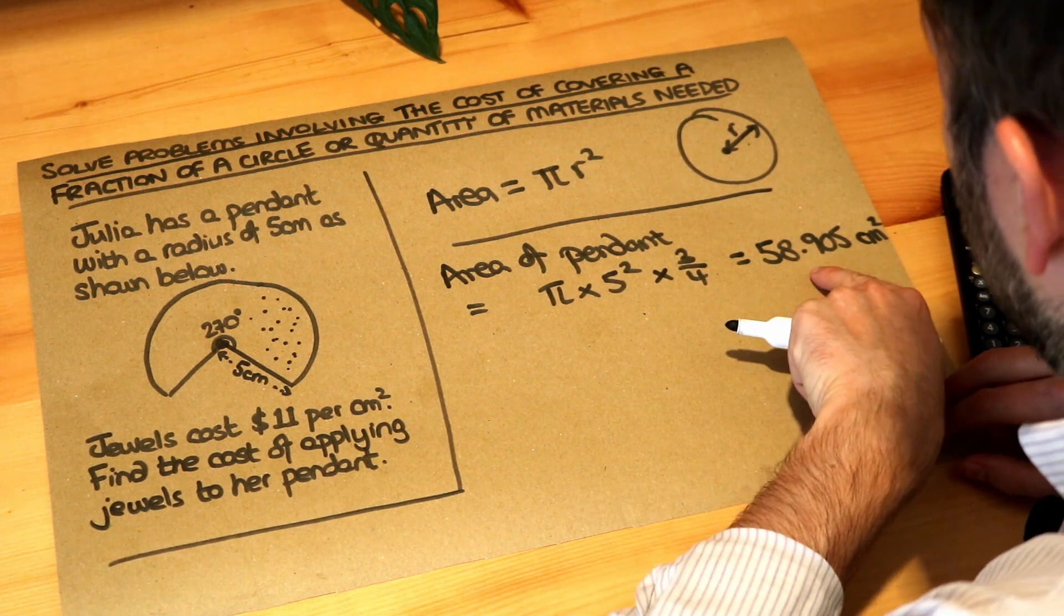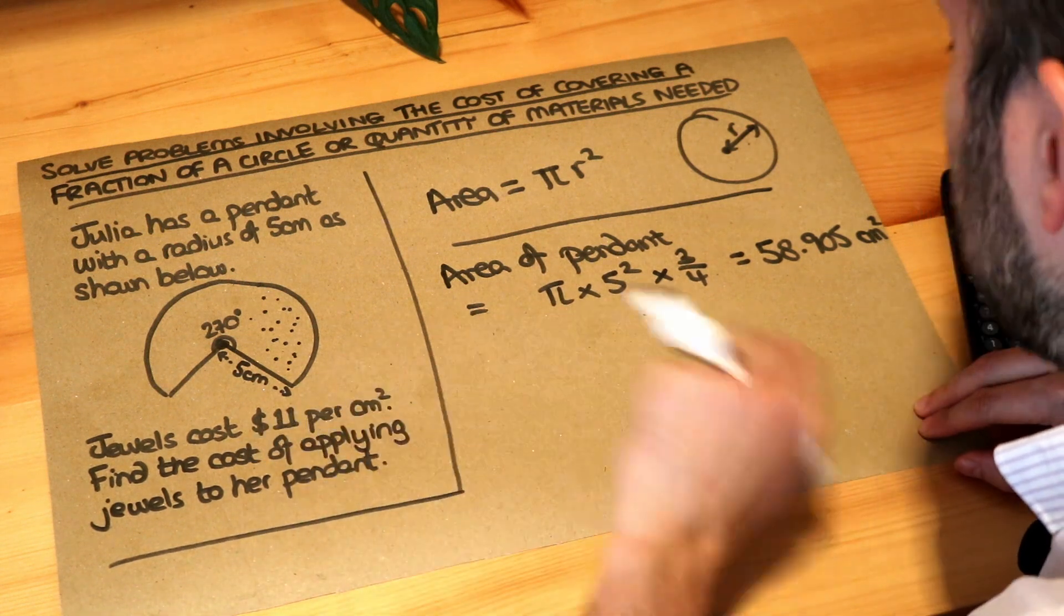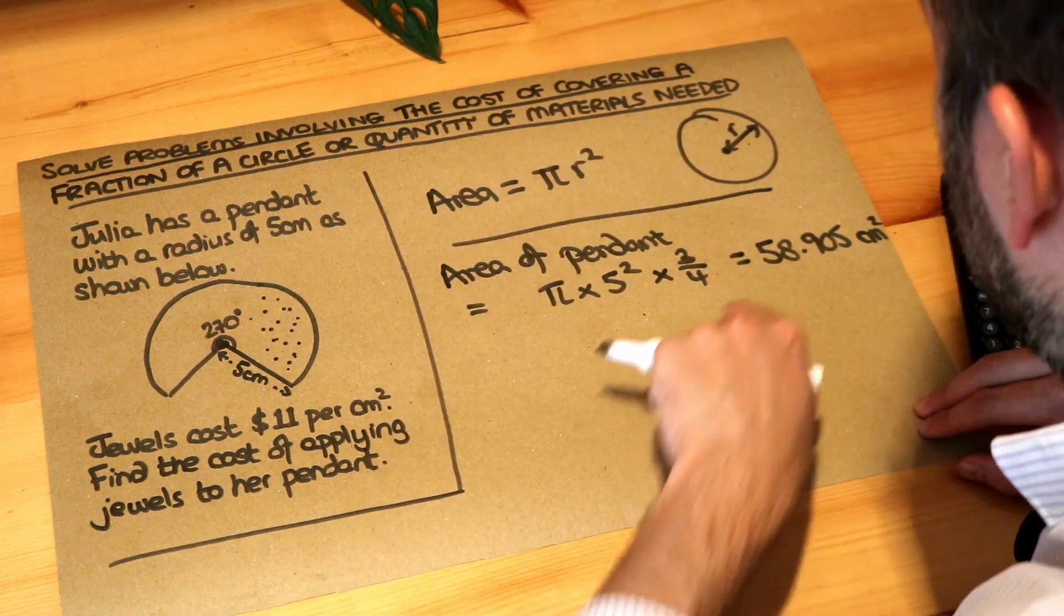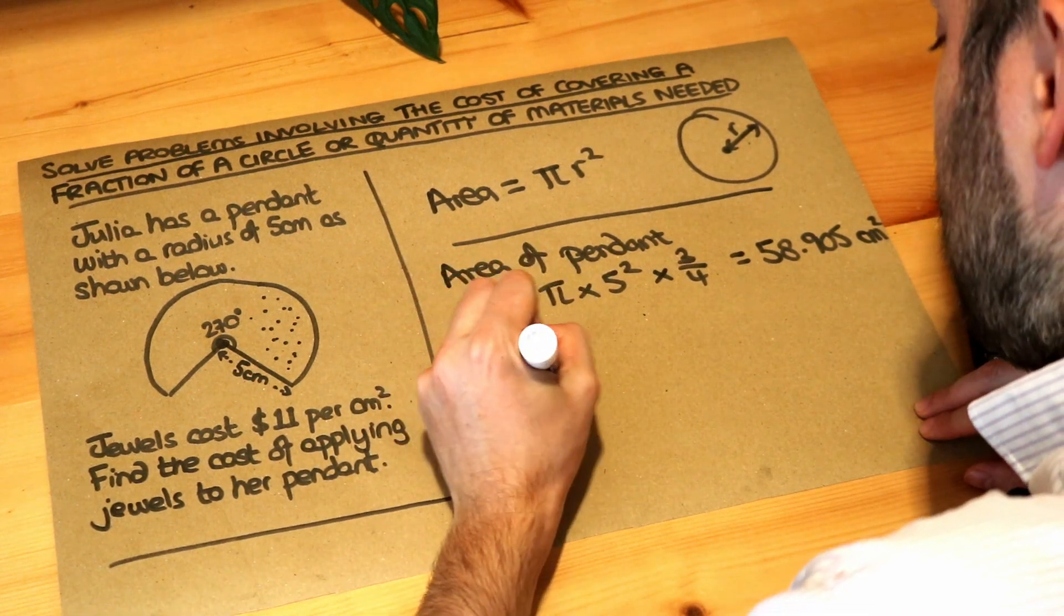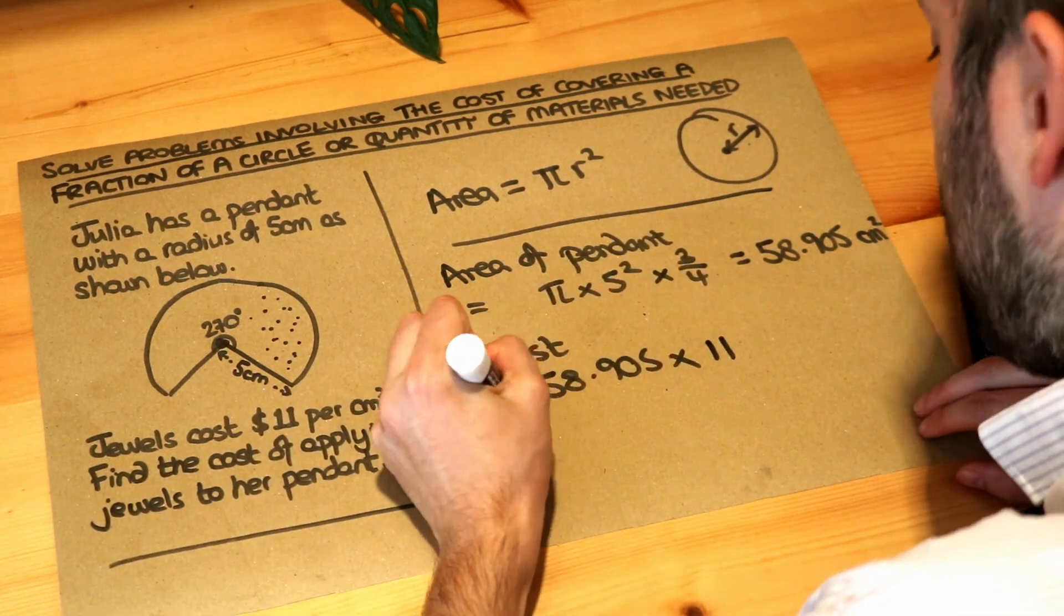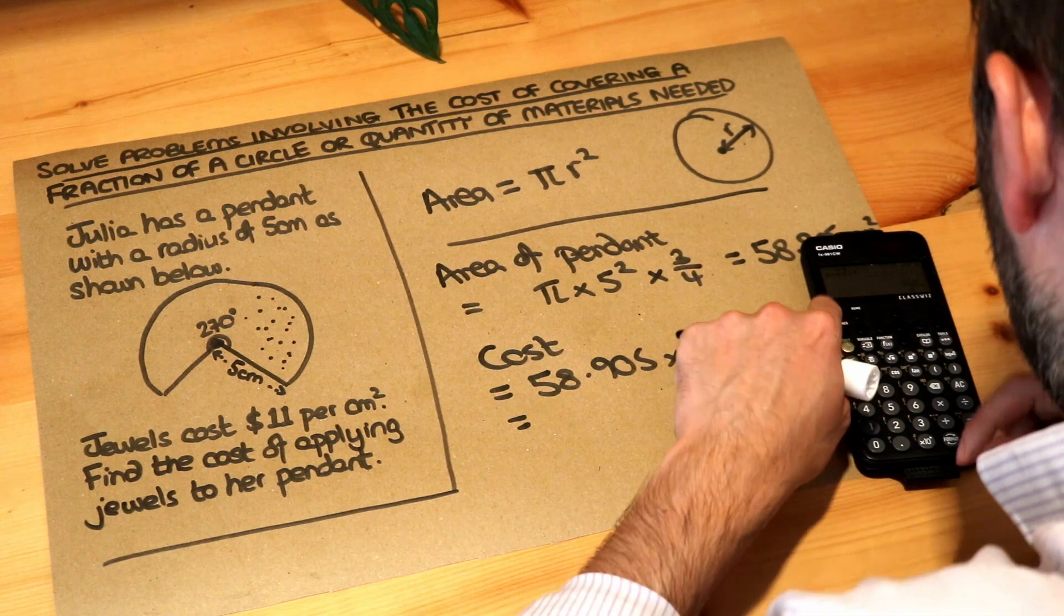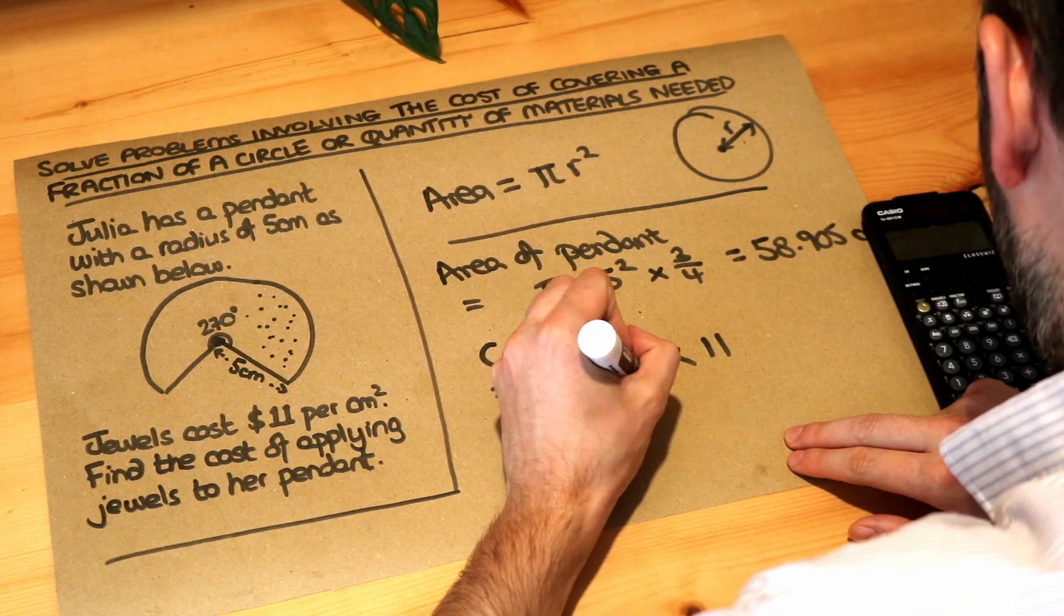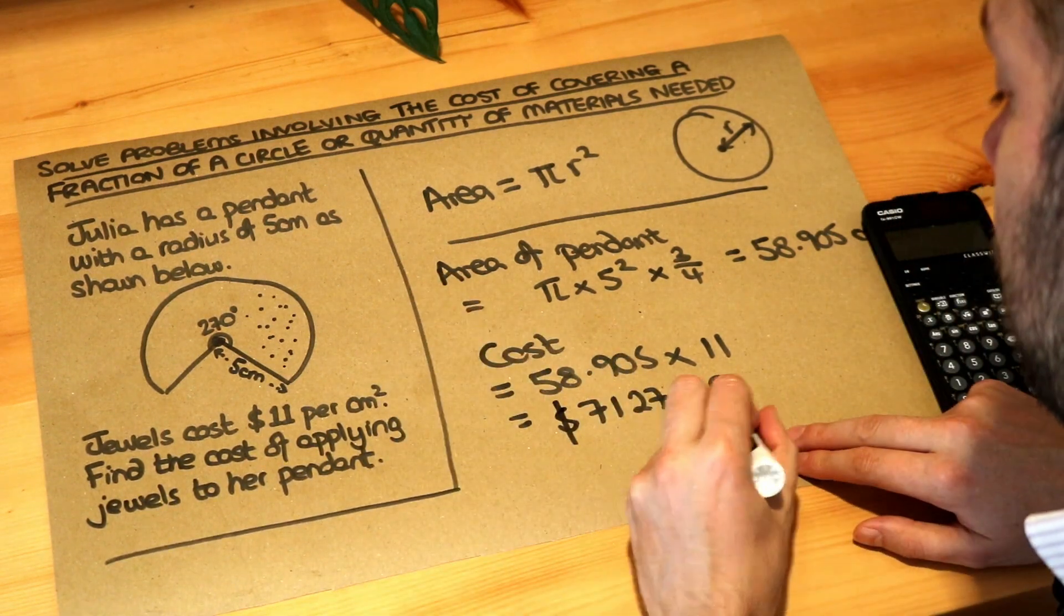Now for each of those centimeters squared we're being charged $11. That's how much it costs to cover each centimeter squared in jewels. Now we've got 58.9 lots of centimeters squared so we need to do 11 times 58.9. So the cost will be equal to 58.9 lots of $11 for each of those centimeters squared. And if I do that in my calculator I can just write that answer times by 11 and convert that to a decimal again and it gives me 647.95, and that's going to be in dollars. So that is the final answer.